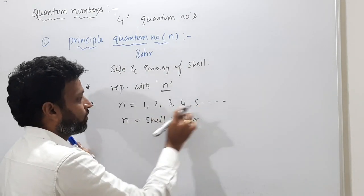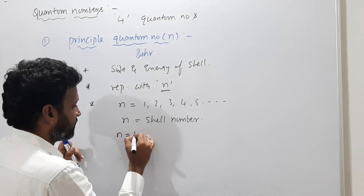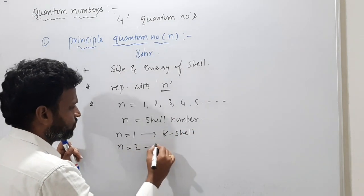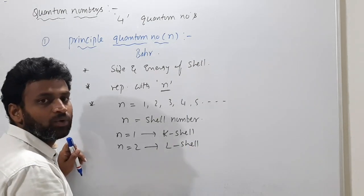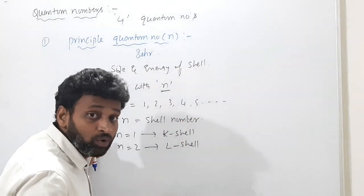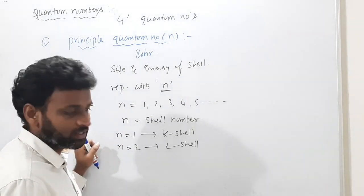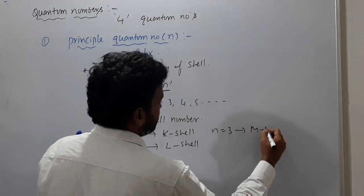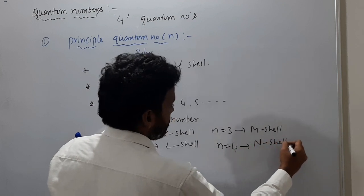When n = 1, the shell is called K shell. When n = 2, it is the L shell. When n = 3, M shell. When n = 4, N shell. In Bohr's model I already gave shell names. Beyond this, if you go to the azimuthal quantum number, you need to know these values.